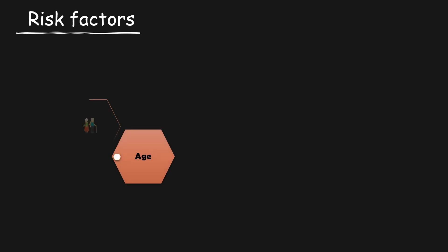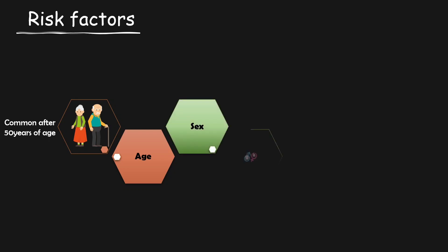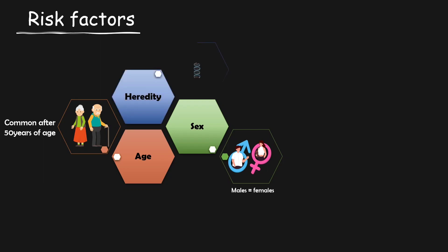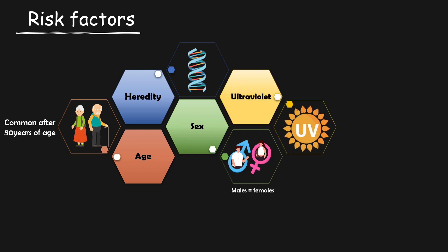Because this is age-related cataract, the most common factor is age. For how aging is responsible for cataract formation, I would like you to go and watch the video on Physiology of Lens — the link can be found in the description box below. This senile cataract is common after 50 years of age. Regarding sex ratio, males and females are equally affected. Next is heredity — cataract can run in families, so hereditary predisposition is one of the factors. Ultraviolet rays can also accelerate the process of cataract.